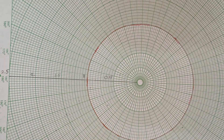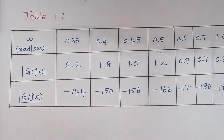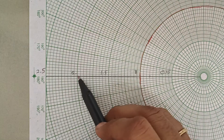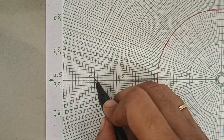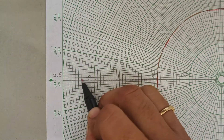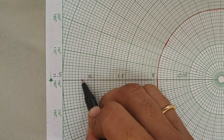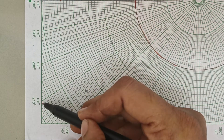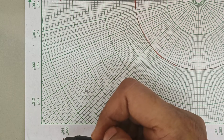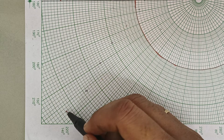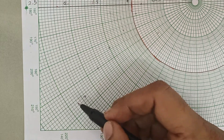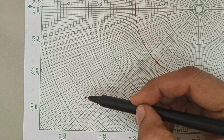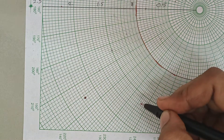The first point is magnitude 2.2 with an angle of minus 144 degrees. This is my 2.2 circle. Moving gradually, between the 140 and 150 lines lies 144 — specifically 141, 142, 143, and this is my 144 line. At the intersection of the 2.2 circle and the 144-degree line, keep a dot — this is my first point.